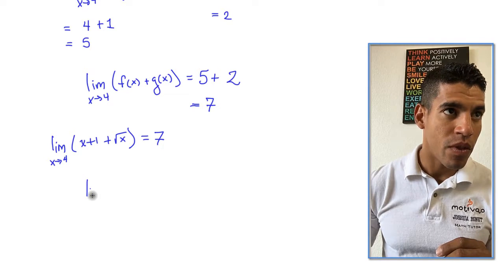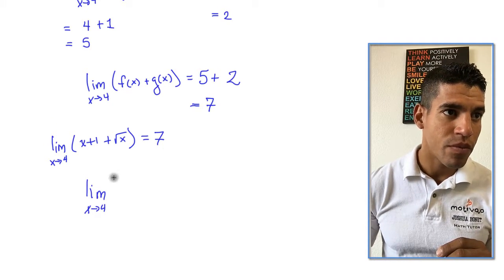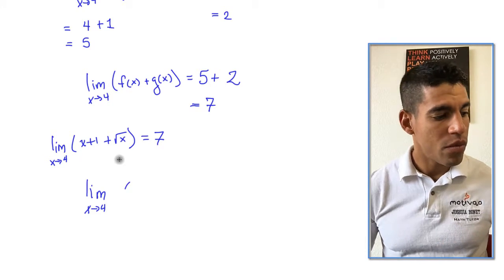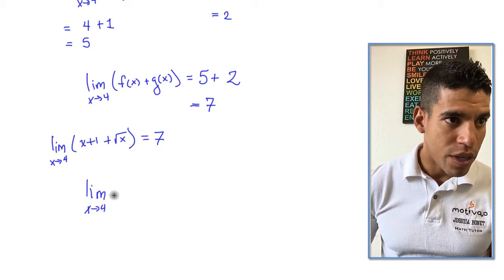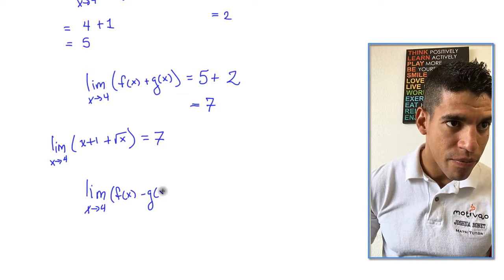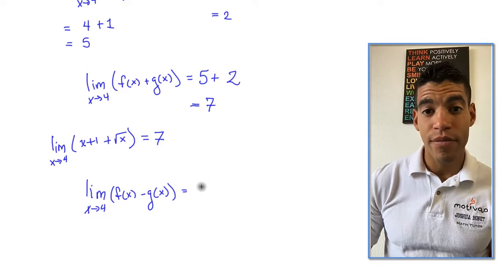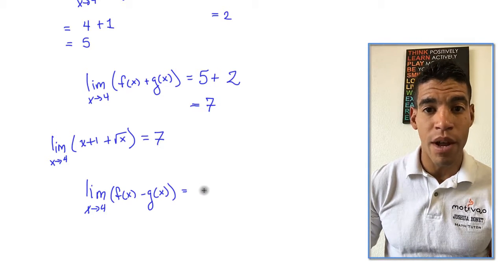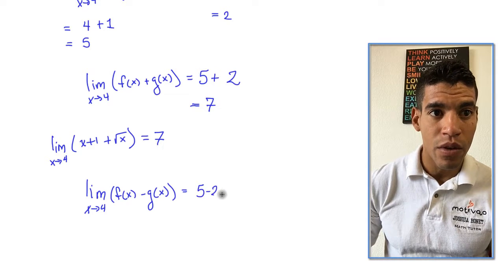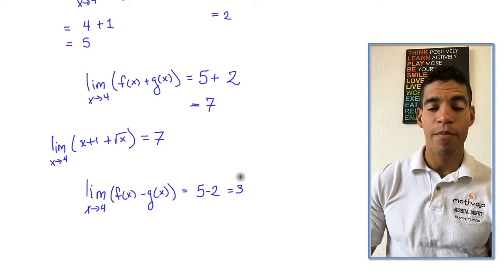Now subtraction: the limit as x approaches 4 of f(x) minus g(x). By the difference theorem, this equals 5 minus 2, which is 3.